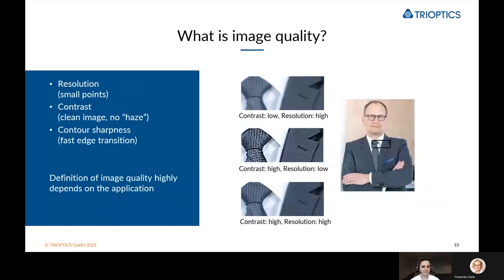Now the question arises: what is image quality? Image quality basically breaks down to three main points: resolution, contrast, and contour sharpness. On the right-hand side you can see an example of low contrast with high resolution versus high contrast with high resolution. Typically what you'd want is high contrast and high resolution at multiple distances.